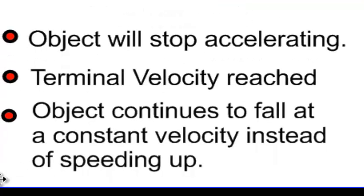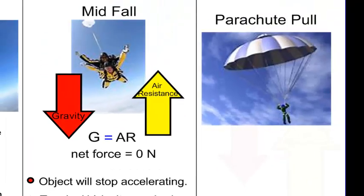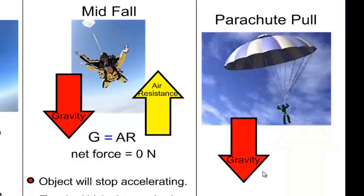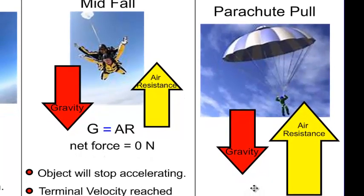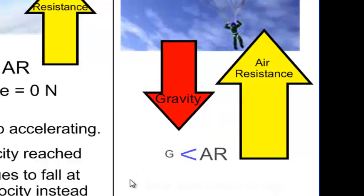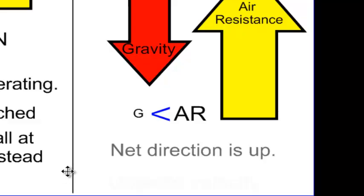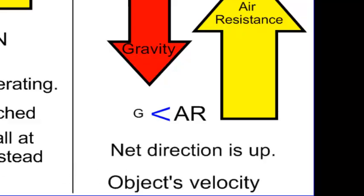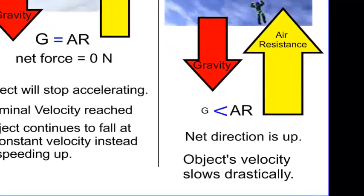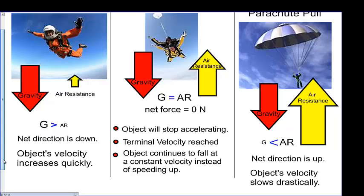The object continues to fall at a constant velocity — it won't speed up anymore. Once she hits terminal velocity, that's when she knows she needs to pull her parachute. Gravity stays the same throughout the whole fall. But once she pulls the parachute, air resistance is huge — catching and trapping all that air — so air resistance becomes greater than gravity. The net direction is up and the object's velocity slows down drastically, helping the skydiver land at around 5 meters per second, which is much more manageable than the 55 meters per second they were traveling mid-fall.